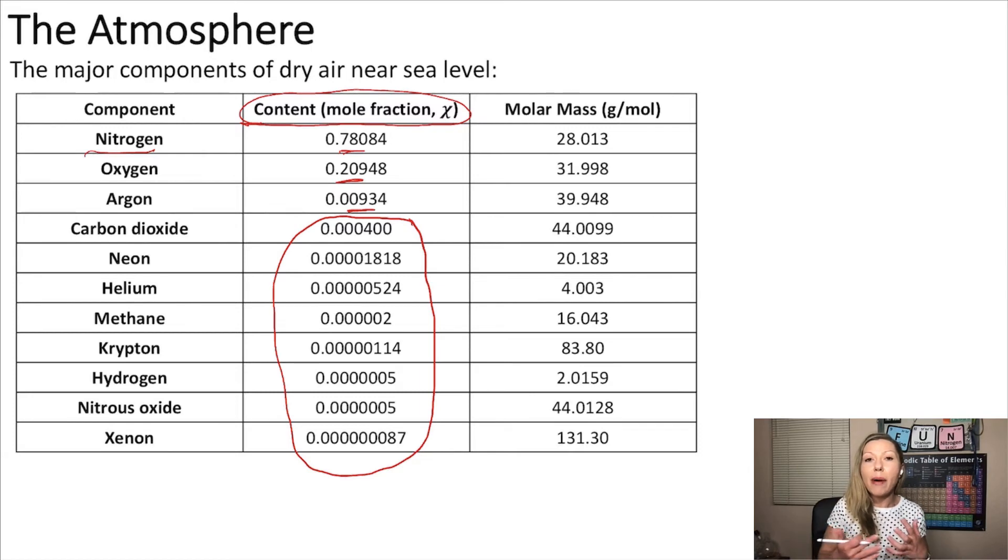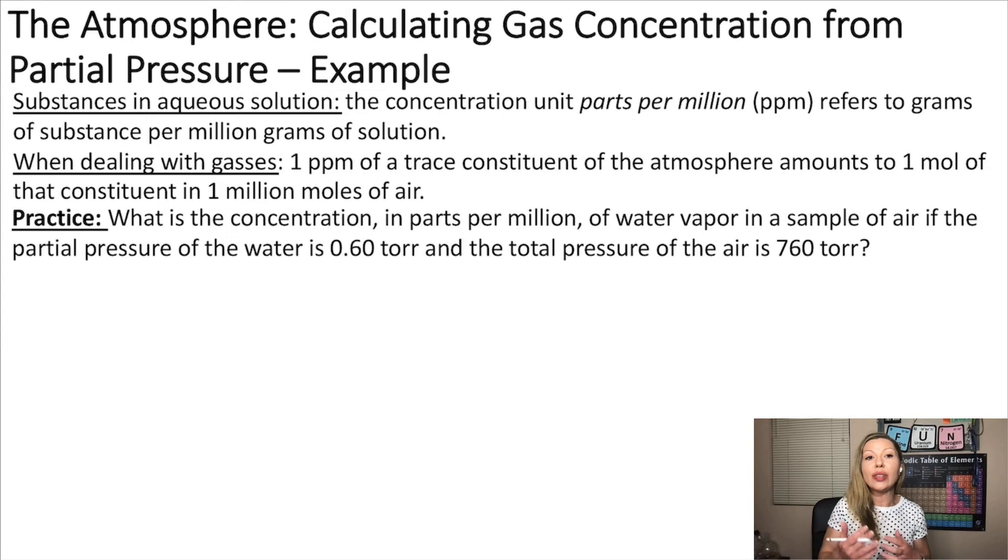When talking about the concentration of different gases in trace amounts, it's not very useful to use mole fraction or percentage. We want to use ppm, or parts per million. The concentration unit ppm refers to grams of substance per million grams of solution.